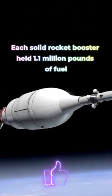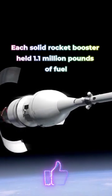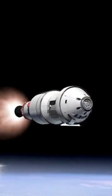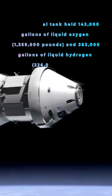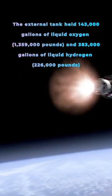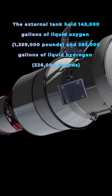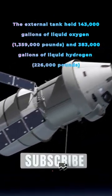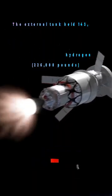Each solid rocket booster held 1.1 million pounds of fuel. The external tank held 143,000 gallons of liquid oxygen (1,359,000 pounds) and 383,000 gallons of liquid hydrogen (226,000 pounds).